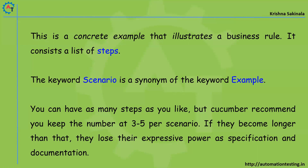To describe a scenario you can have as many steps as you like, but Cucumber recommends keeping the number at three to five steps per scenario. If they become longer than that, they lose their expressive power as a specification and documentation. So when you write any scenario or example, try to make sure you put your business rule within three to five steps.